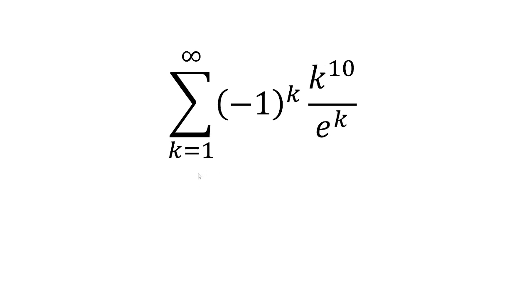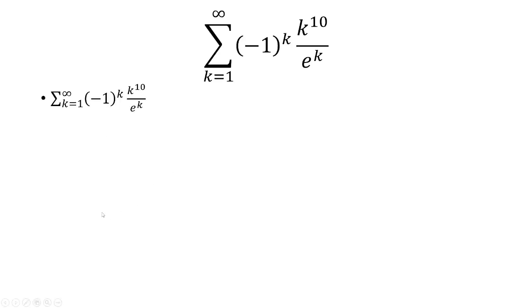In this video, we're going to see whether the sum from k equals 1 to infinity of negative 1 to the k of k times k to the 10th power over e to the k converges or diverges.